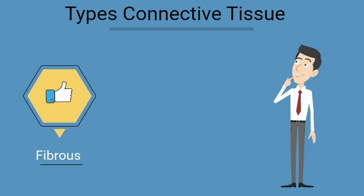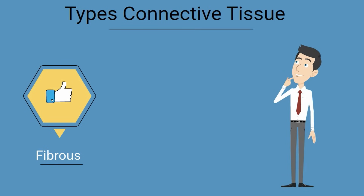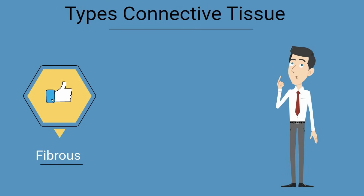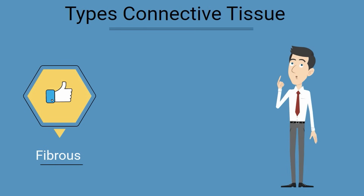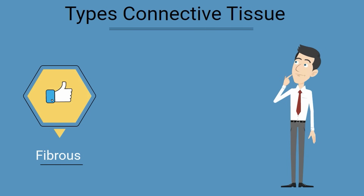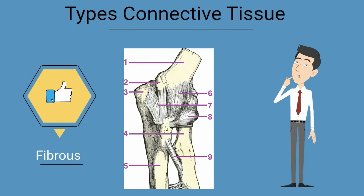Next you have fibrous connective tissue. They have a large amount of collagen and few cells. They are found in tendons and ligaments.